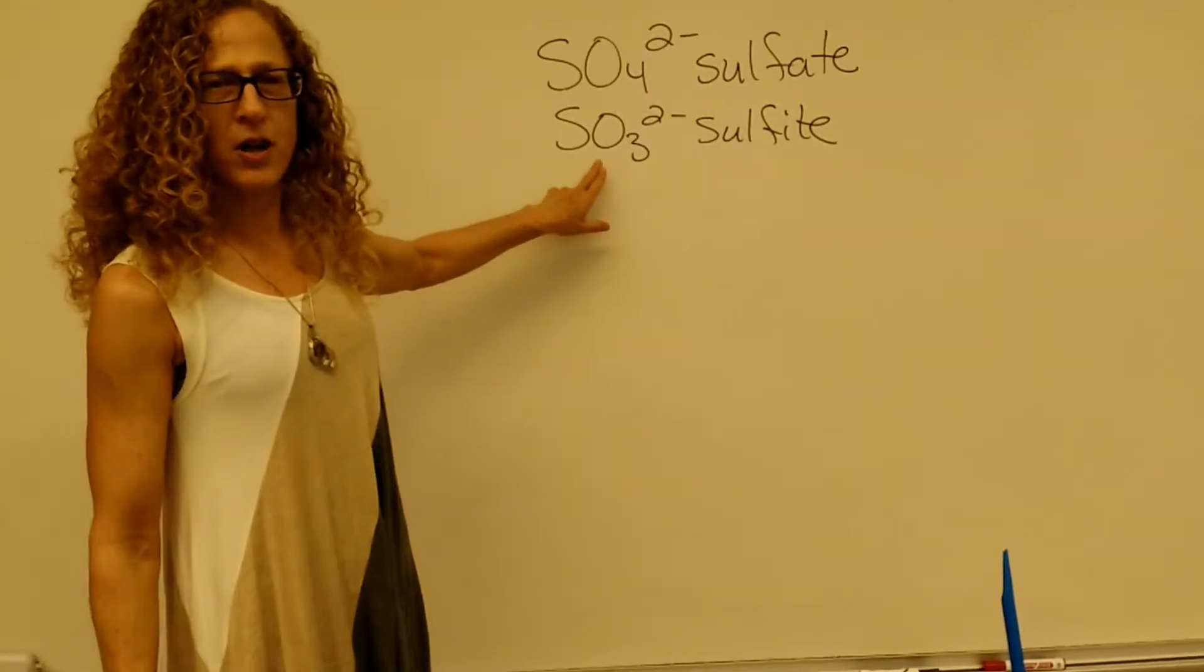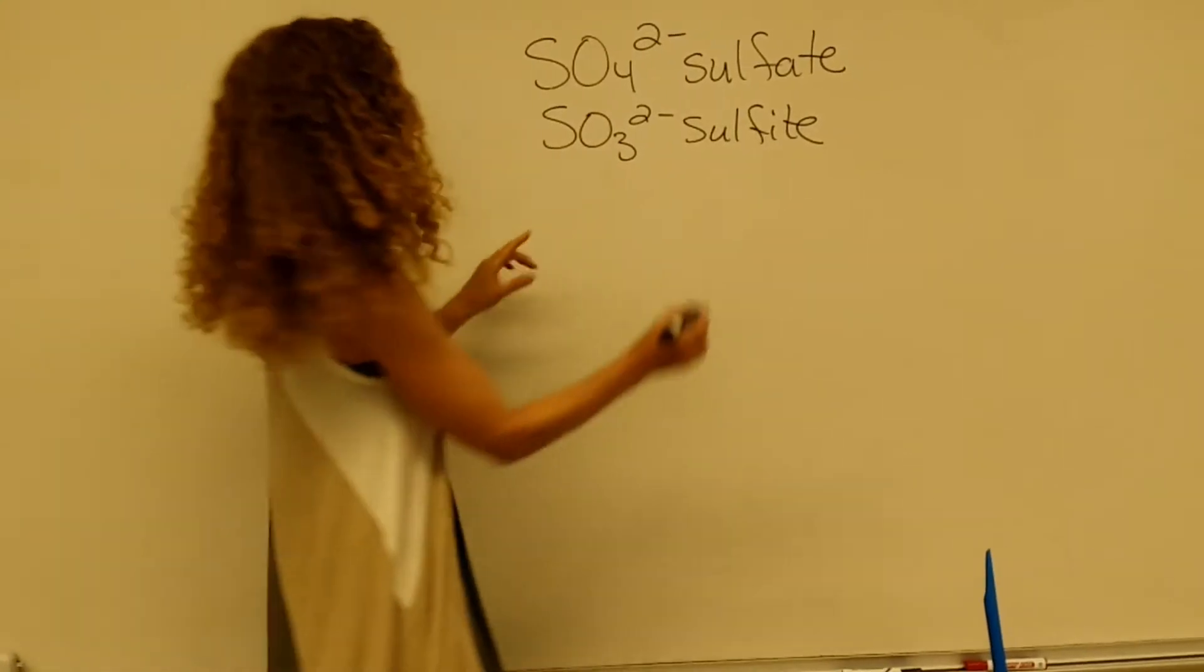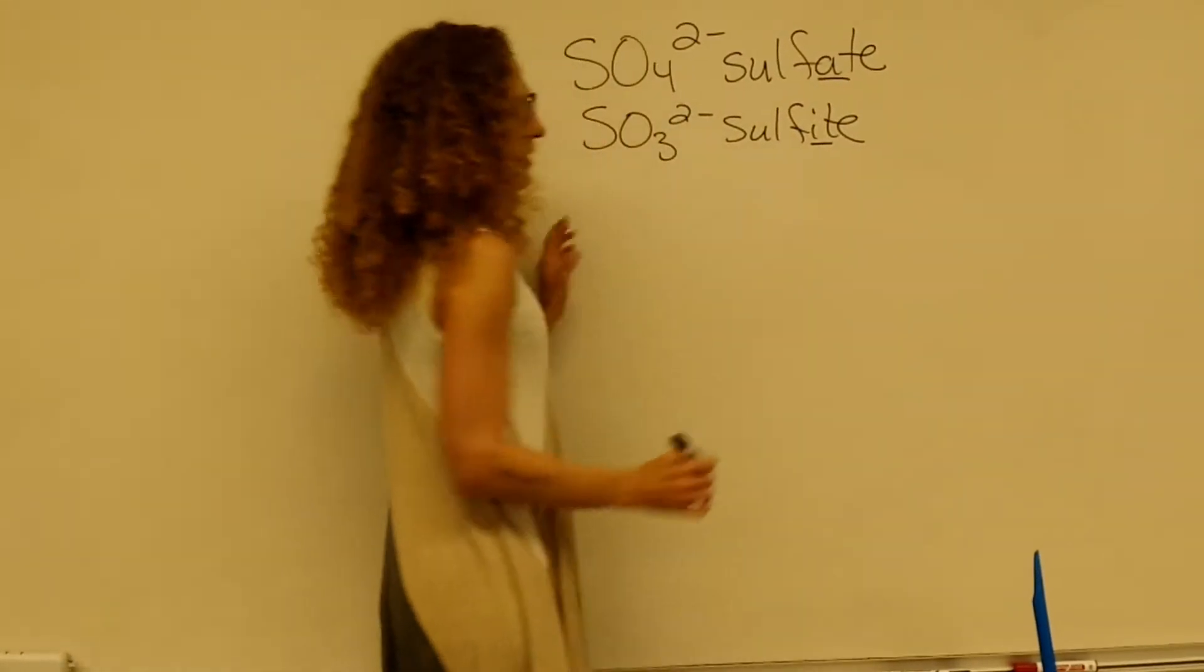This ion is called sulfite. It's almost the same except you'll see there's only three oxygens and instead of an A, there's an I.